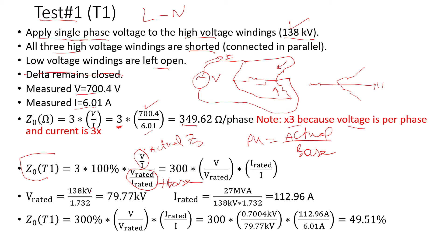The winding I'm applying voltage to is 138 kV, but I need the phase-to-neutral voltage, so I divide by √3, giving 79.77 kV as the rated phase voltage. The rated current for the high voltage winding is 27 MVA divided by (138 kV × √3), which equals 112.96 amps.